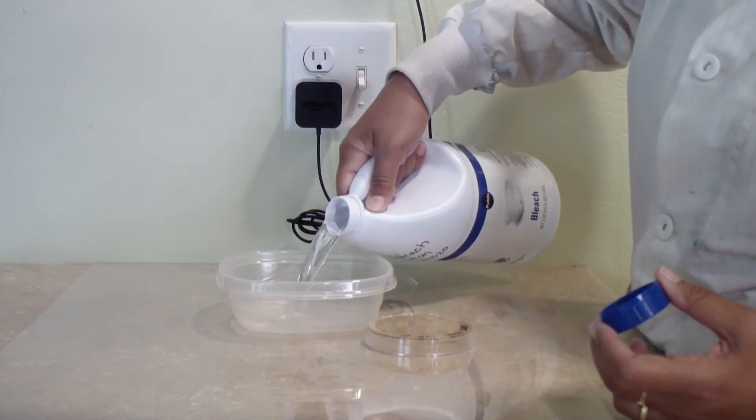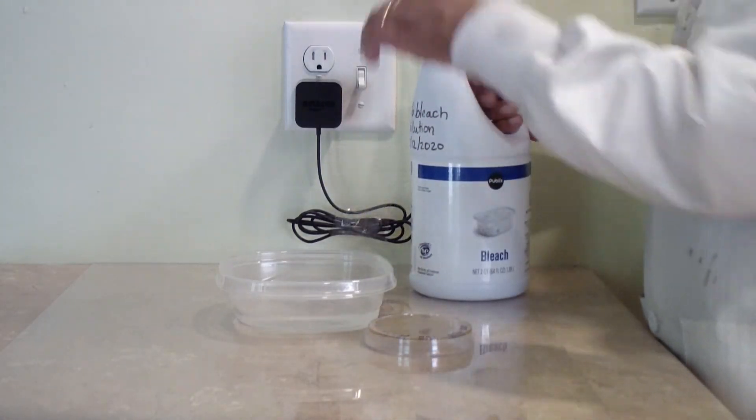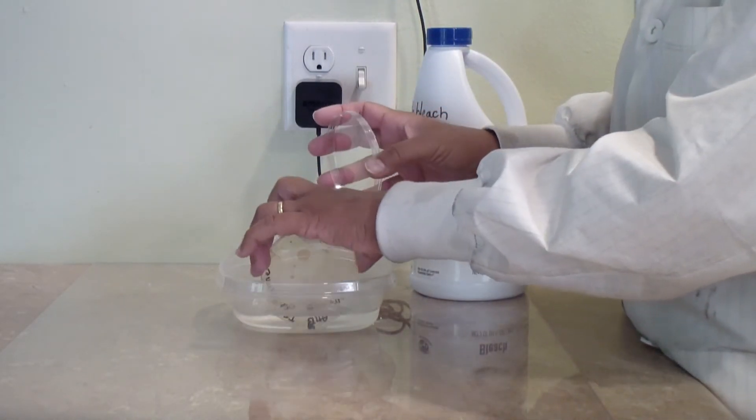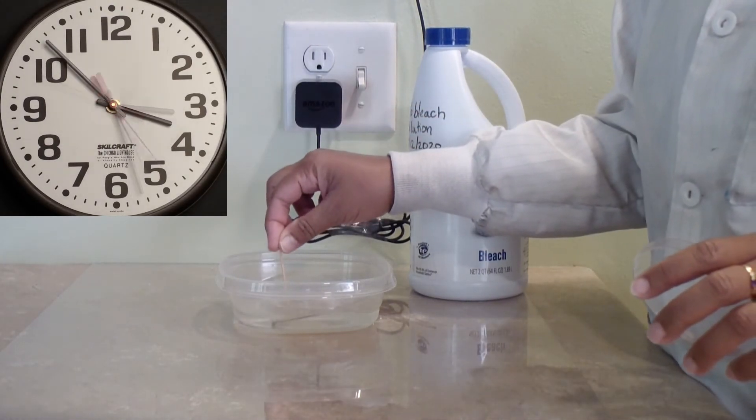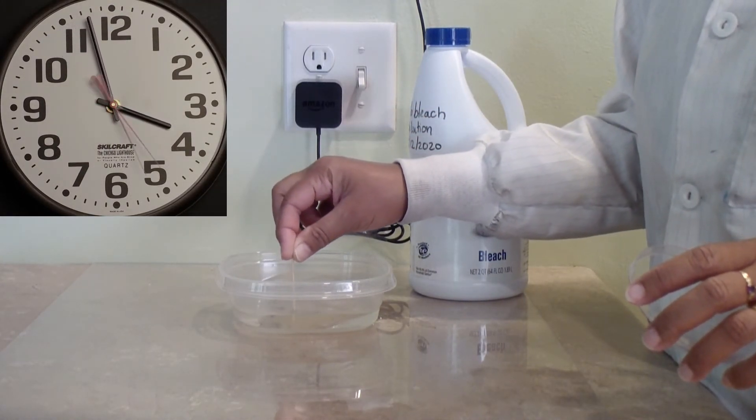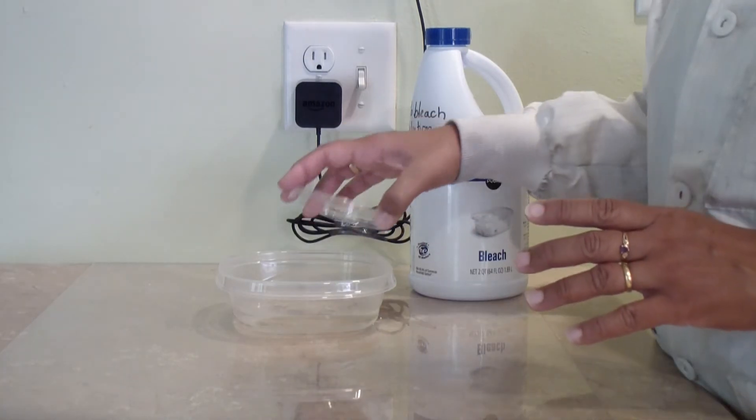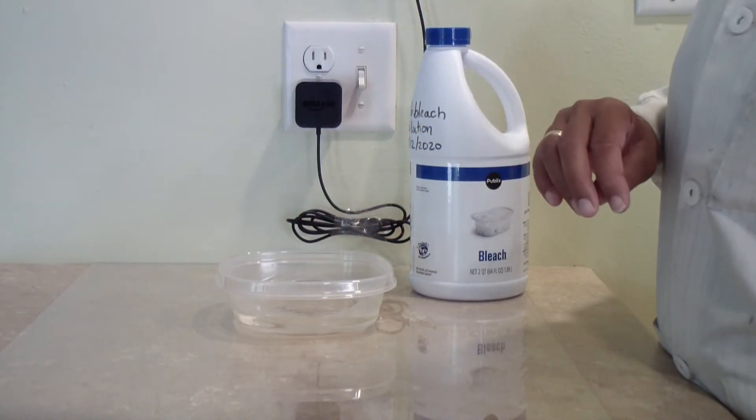Decontaminate the plate you would like to discard by soaking it in a disposable container with 10% bleach for at least 24 hours. The medium should be entirely submerged. It is best if you have a lid so that the bleach does not accidentally spill out.